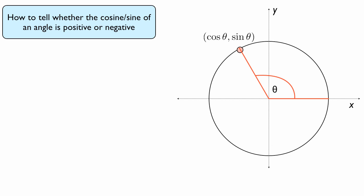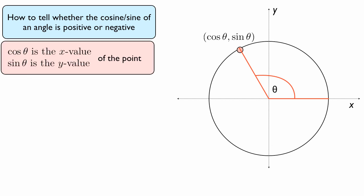And knowing the coordinates of that point will allow us to find what the cosine theta and sine theta are for that point. The reason is, cosine theta is the x value of that point. Sine theta is the y value of that point.